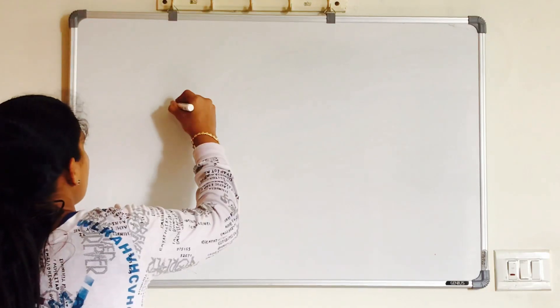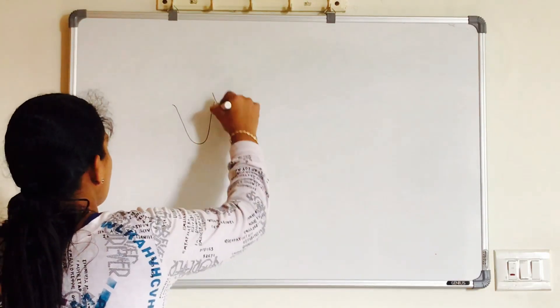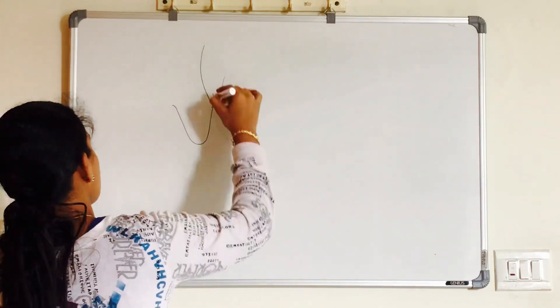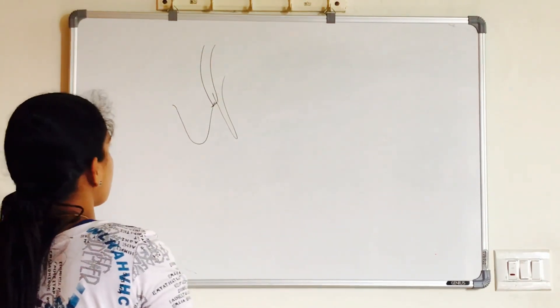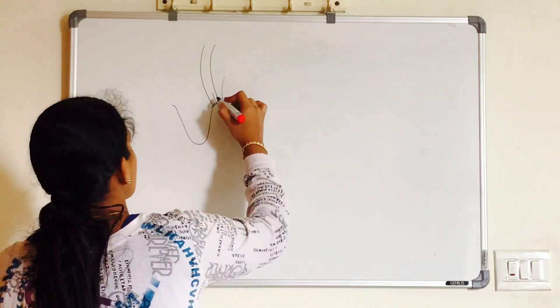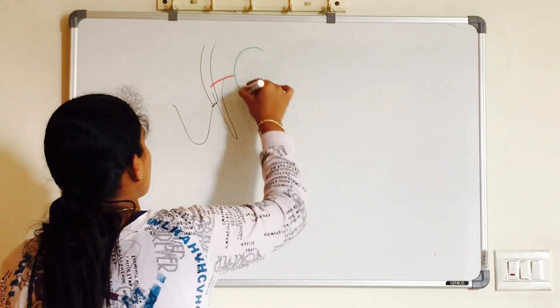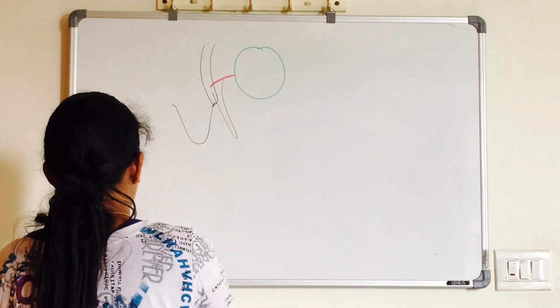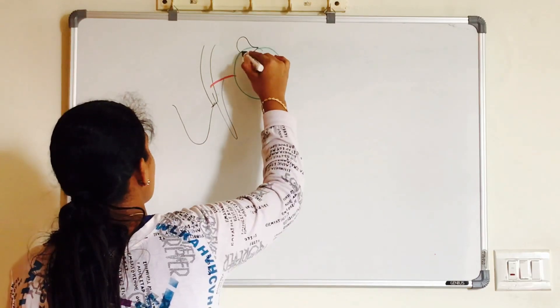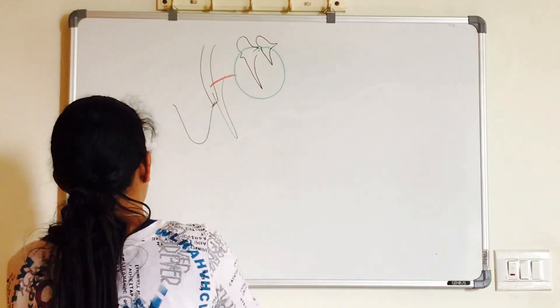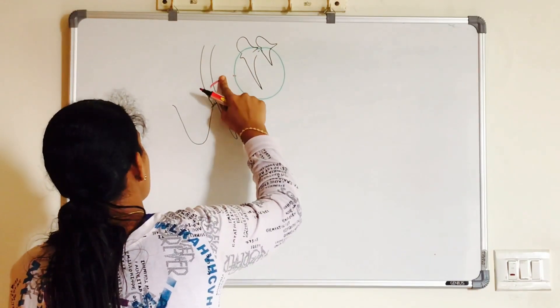Let us move on to chorda tympani nerve. Before the nerve coming out of stylomastoid foramen, chorda tympani nerve is given just 6 millimeter above the level of exit. To know the course of chorda tympani, let us consider the lateral wall of middle ear cavity. We have tympanic membrane with ear ossicles, malleus and incus.